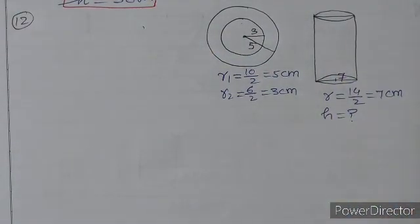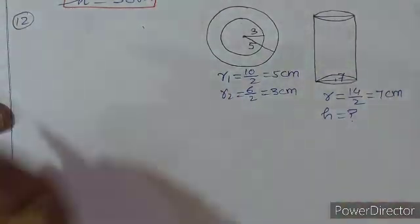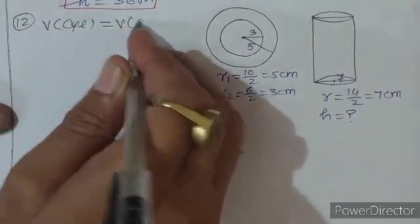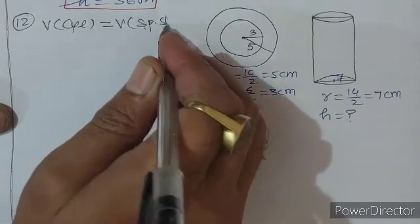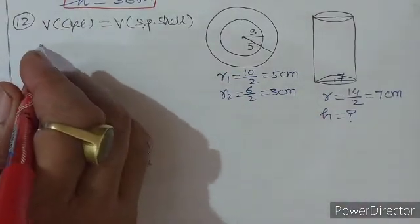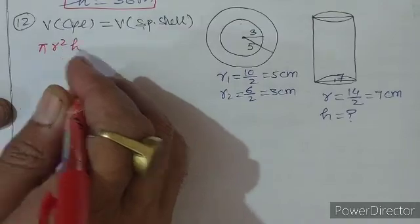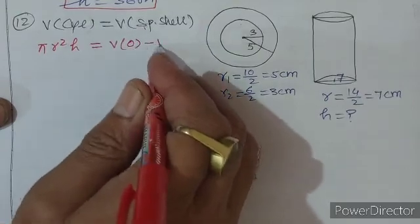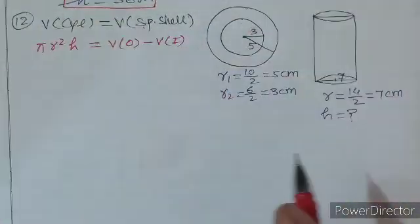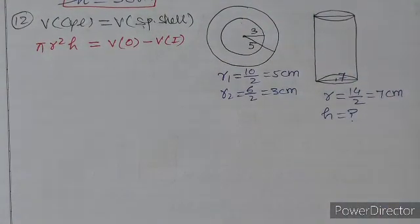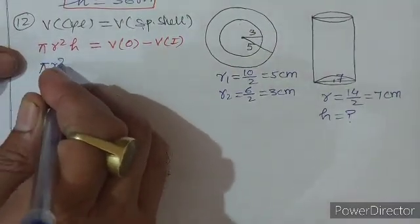एक को melt करके दूसरी चीज़ बनाते हैं तो दोनों के volume हर हाल में equal होंगे। Volume of cylinder = Volume of spherical shell। π r² h = Volume outer − Volume inner। अंदर का volume बाहर के volume में से minus करेंगे तो ball में लगा metal निकलेगा।